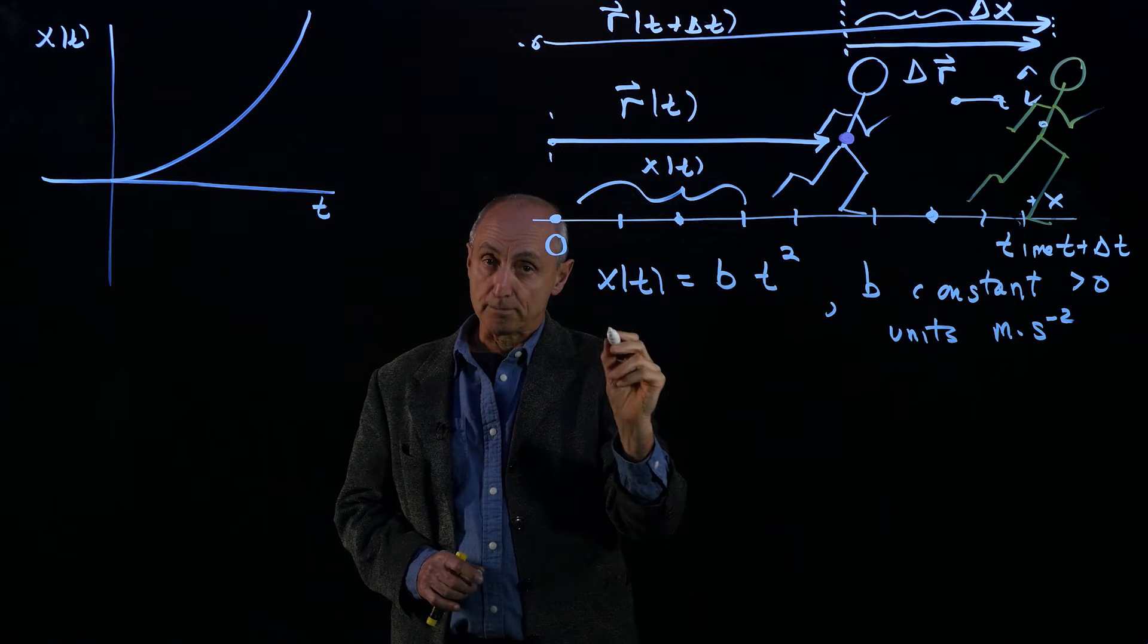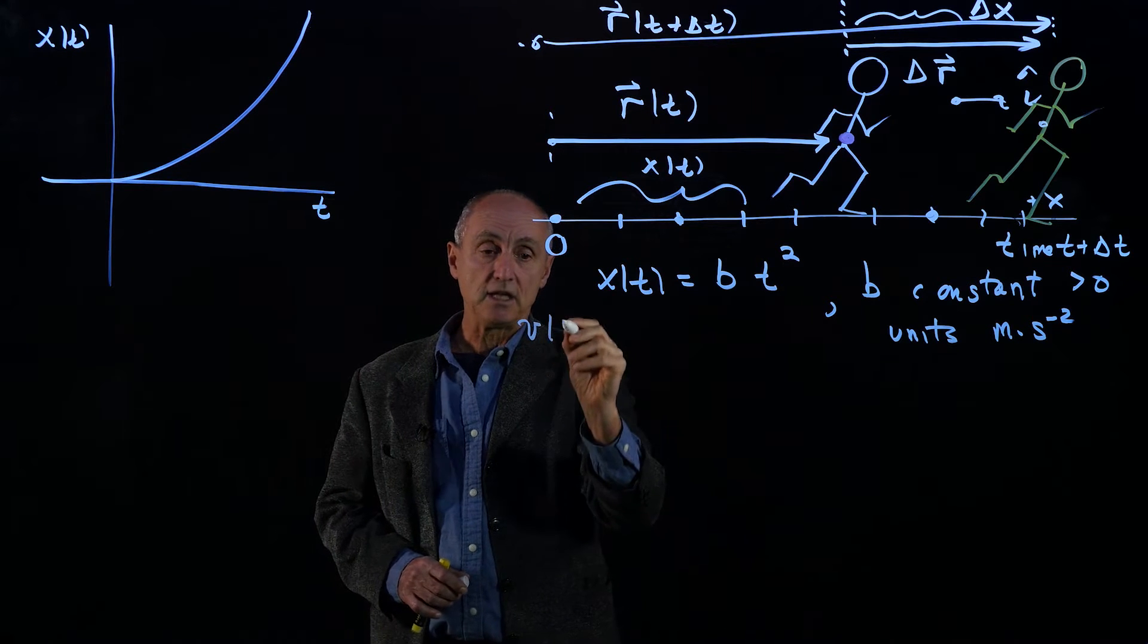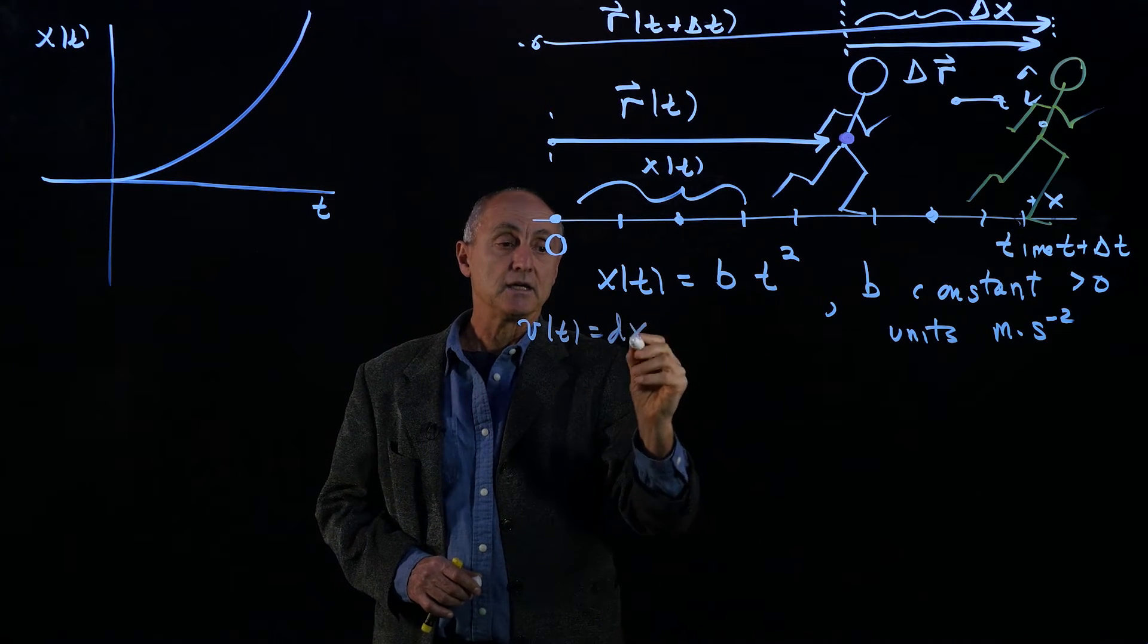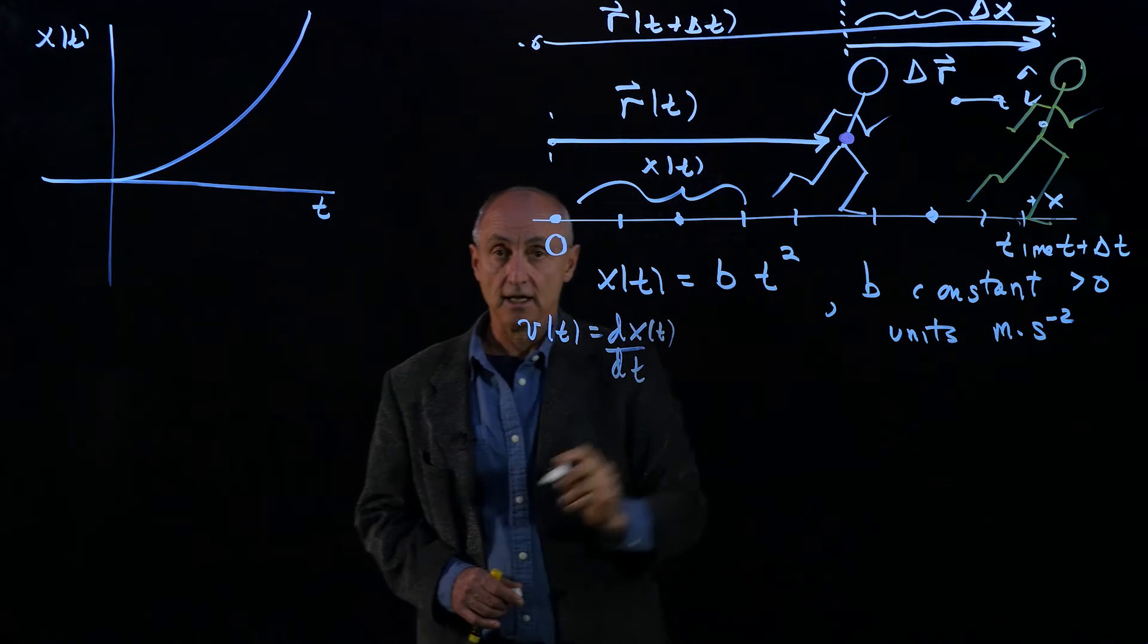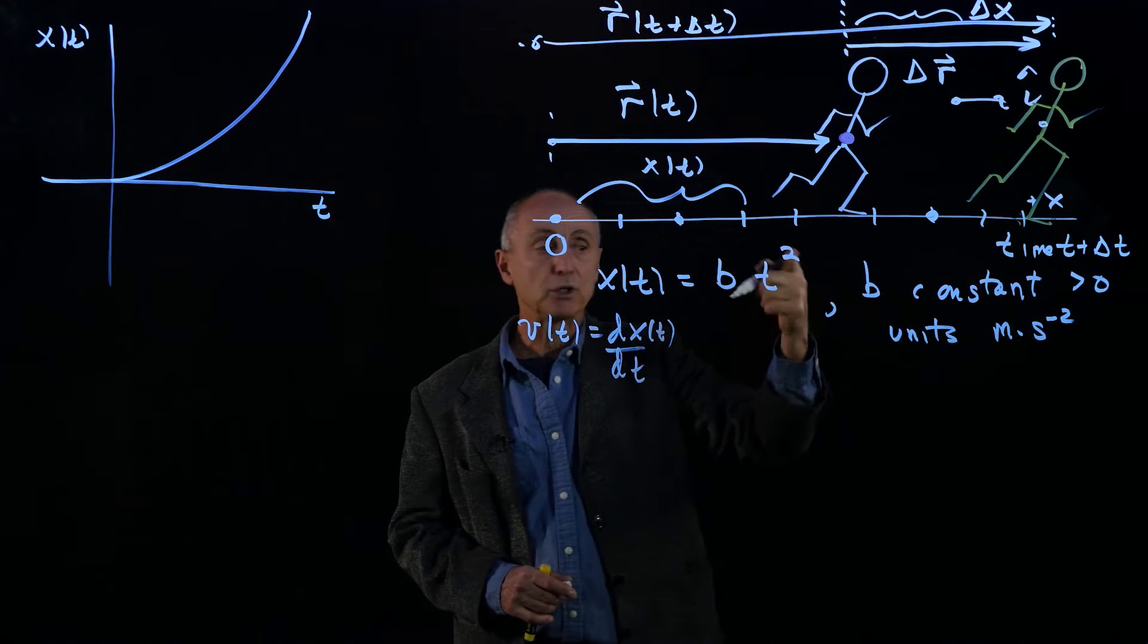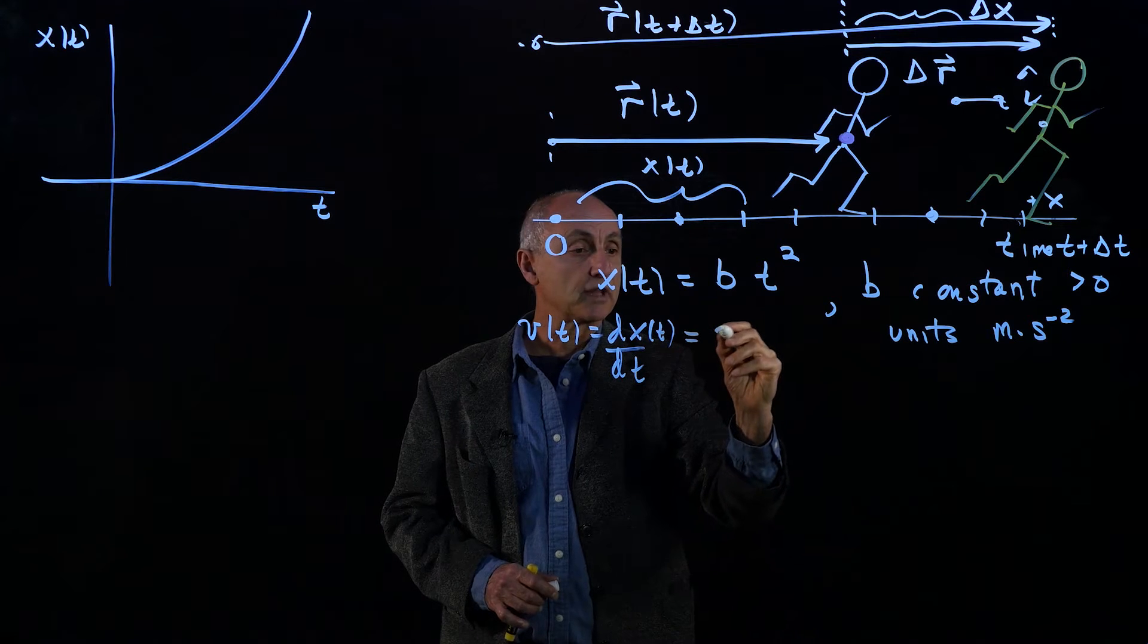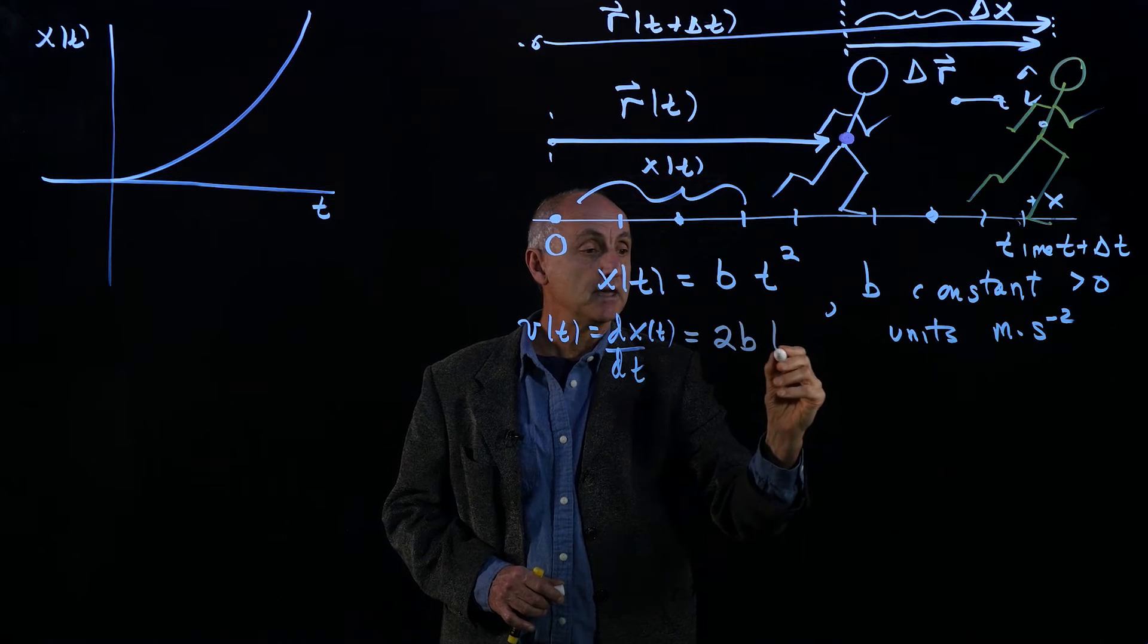Now, the velocity, component of the velocity, remember v(t) is given by dx/dt of this function. And the derivative of a polynomial, t squared, is very simple. That's just simply 2b times t.